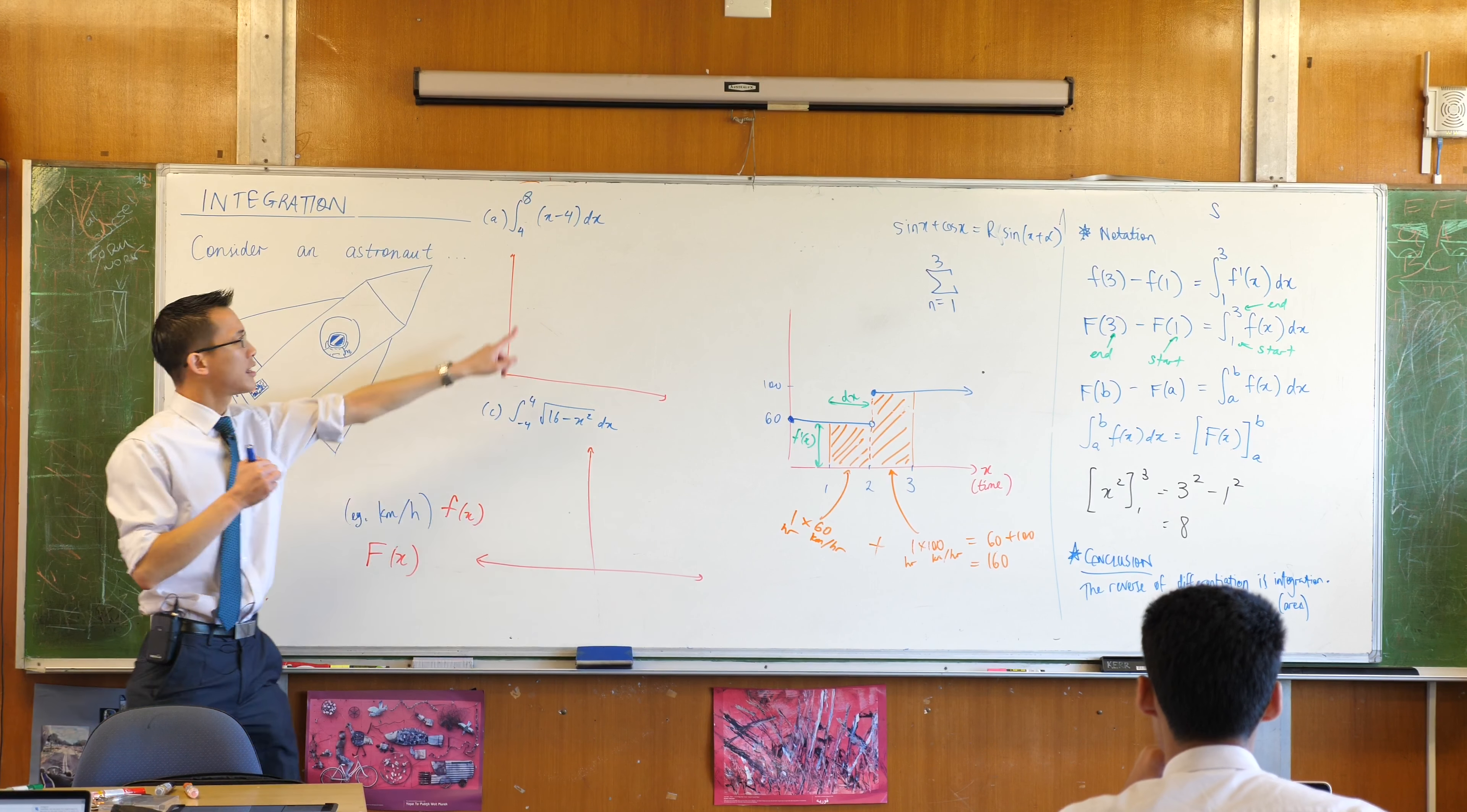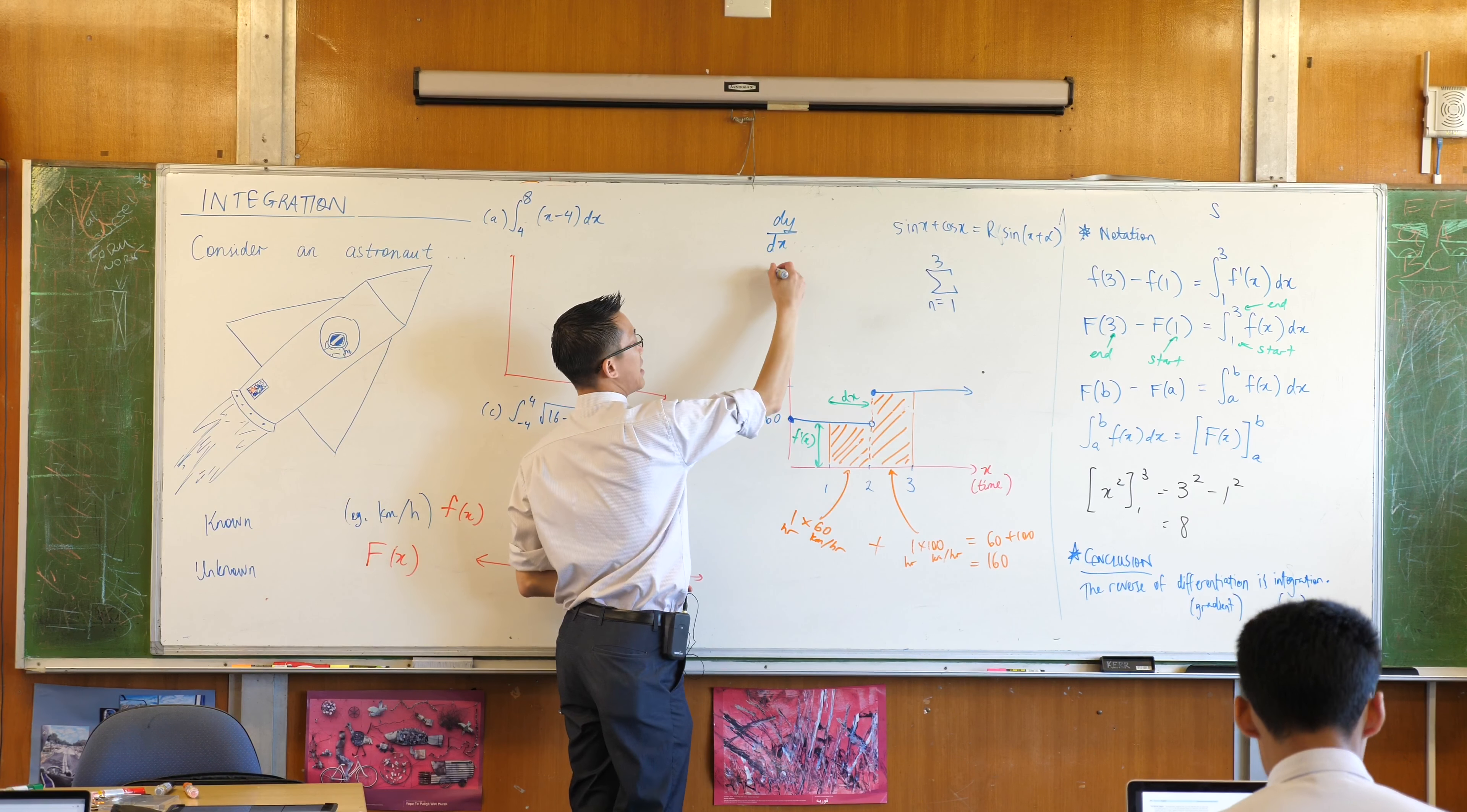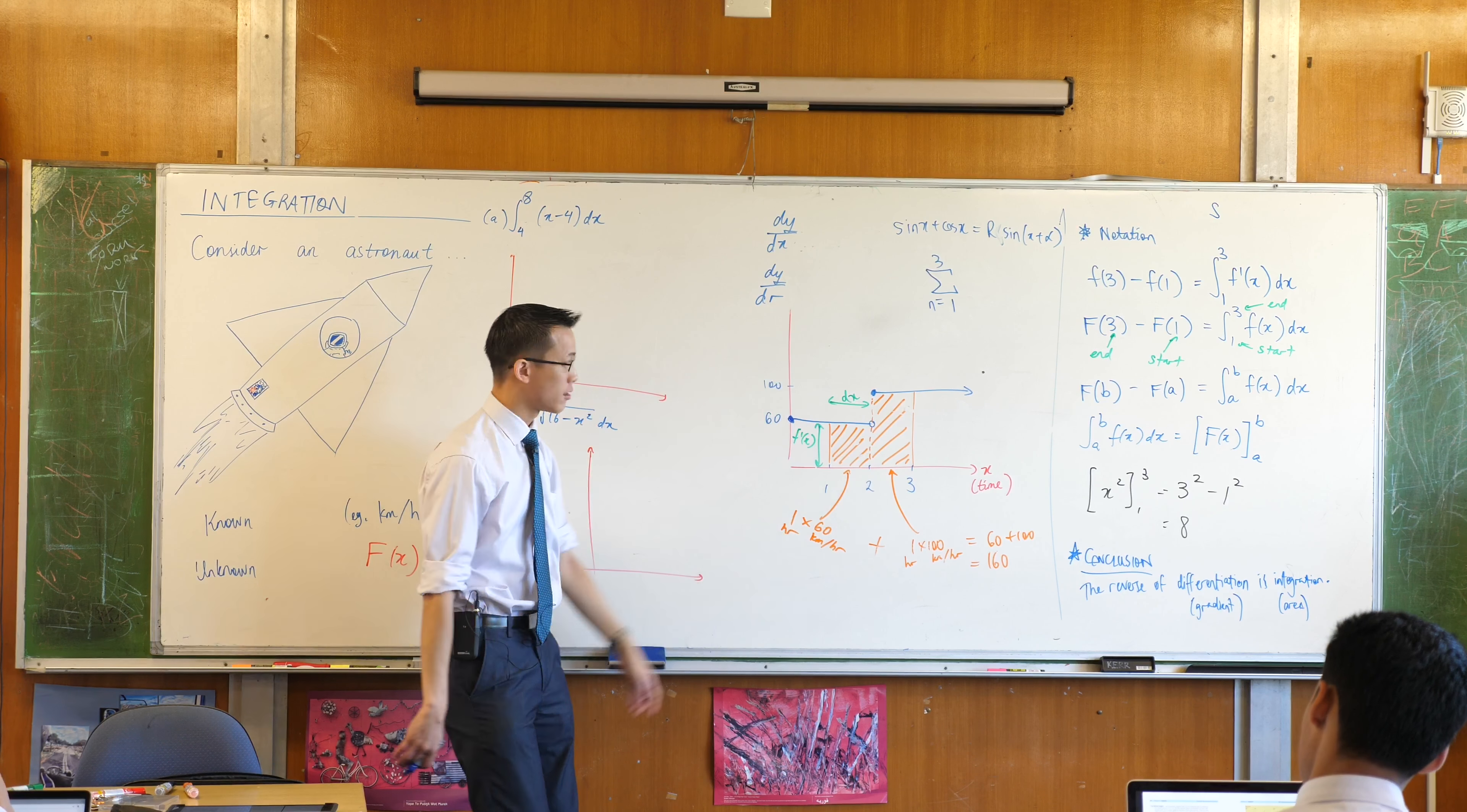So have a look at this one with me. The way I read this is the integral from 4 to 8 of this function with respect to x. Just like if I said to you, what does that mean in comparison to say this? This would mean how is y changing as x changes with respect to x. This is how is y changing with respect to r, if r was like a horizontal axis.